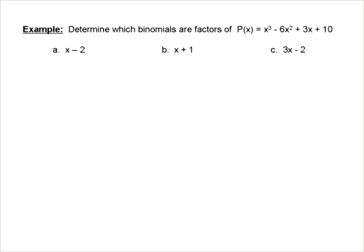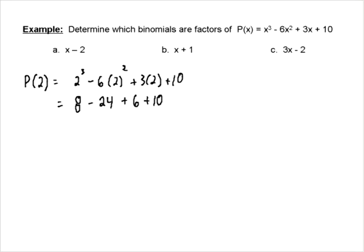Let's look at the first one. We're trying to figure out if our binomial is X minus 2, so we're going to put 2 into the polynomial. We're going to have 2 cubed minus 6 times 2 squared plus 3 times 2 plus 10. We want to determine if this remainder is equal to zero. So we get 8 minus — remembering order of operations — 2 squared is 4, times 6 is negative 24, plus 6 plus 10. So we get 6 plus 8 is 14, plus 10 is 24. 24 minus 24 is equal to zero.